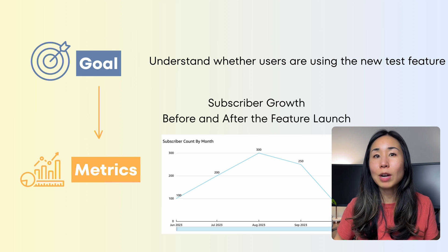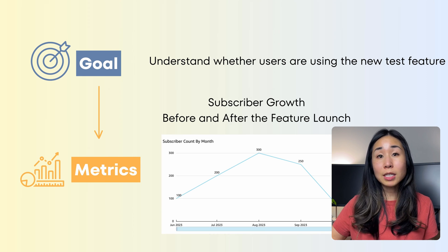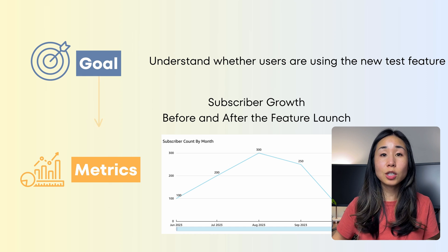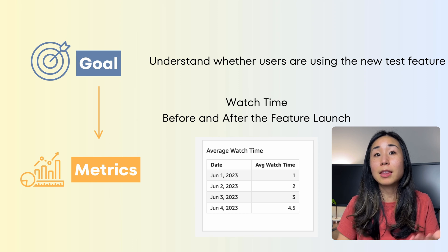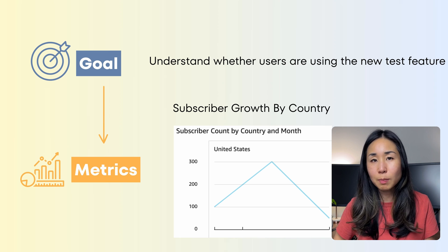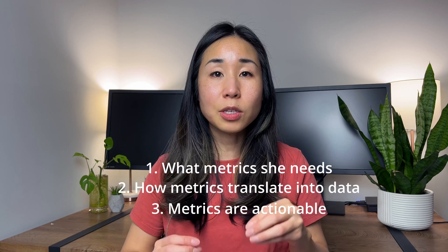These metrics will measure the goals. The goal of understanding whether users are using the new test feature can be measured with metrics like subscriber growth — we can look to see if there's a trend of growing subscribers after the new feature was launched. We could also look at watch time to see if that's impacting how long users are now watching. We can even group these metrics by country to see if there's an impact. This process is collaborative — most of the time the product manager will have her requirements and metrics already identified, and it's my job to go through each of them, understand what she needs, how that translates into data, and make sure each metric is actionable and impactful to the business.